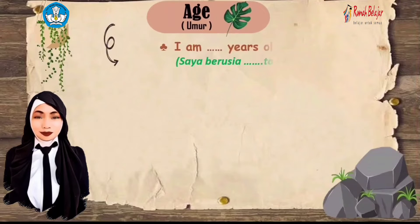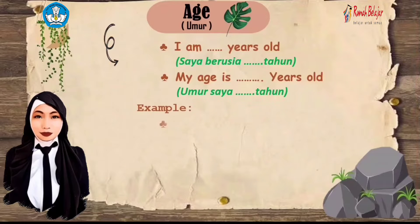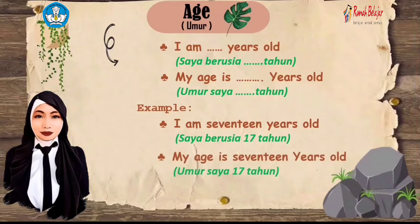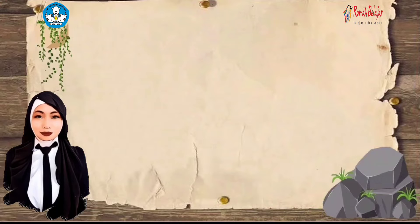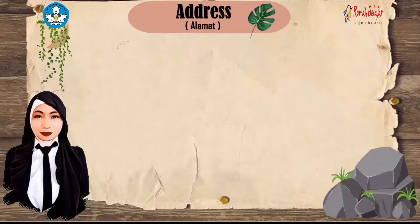After that, you can tell about your age. To state your age in English, use: 'I am [number] years old' or 'My age is [number] years old.' For example: 'I am 17 years old' or 'My age is 17 years old,' meaning umur saya 17 tahun.